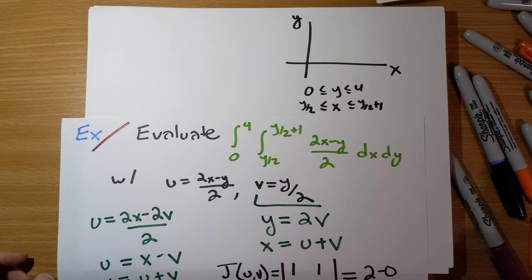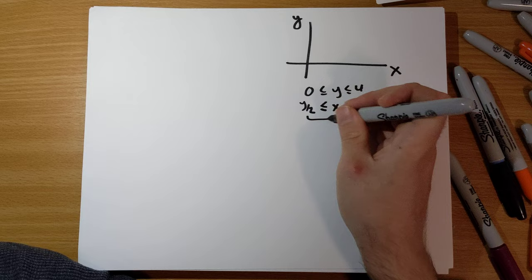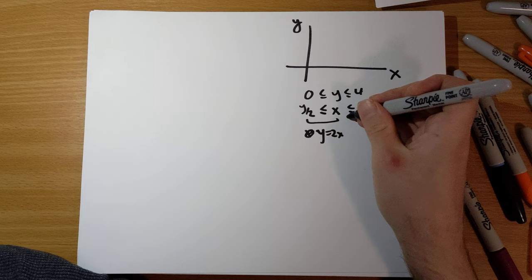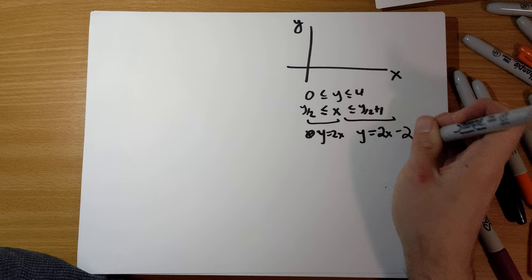Okay, x is equal to y over 2. This is going to be multiplied by 2. y is equal to 2x. x is equal to y over 2 plus 1 multiplied by 2. This is going to be y is equal to 2x minus 2. Okay, so let's graph here.